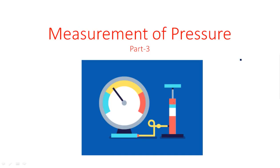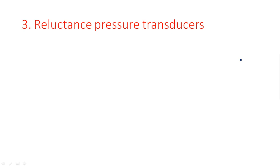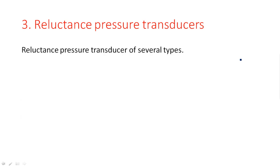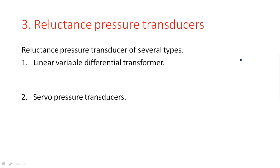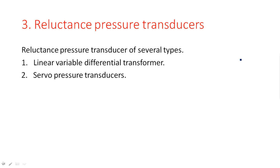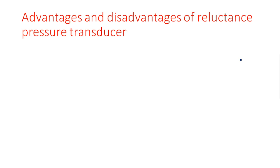Hi everyone. In this video I am continuing the measurement of pressure. In the previous two videos I explained the types of pressure measurement and the first two types. Now coming to the third type, which is known as the reluctance pressure transducer. Reluctance pressure transducers are of several types; we are discussing two types here: linear variable differential transformer and servo pressure transducer.